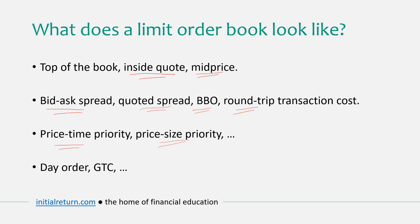One thing I haven't mentioned yet is the distinction between a day order and a good-till-cancelled order. A day order means that at the end of the trading day, if your order hasn't been executed, it disappears from the order book — it's only valid for that day. If you want your order to stay on the book, you specify GTC (good-till-cancelled). Typically there is still a time limit, usually two to three months, because a completely stale order has no point remaining on the book.